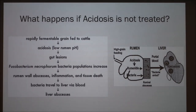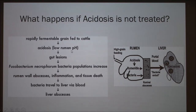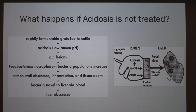If acidosis isn't treated, many serious consequences can occur. Going through the cycle: the animal eats grain, which is rapidly fermentable, and they develop acidosis due to low rumen pH. Gut lesions begin to occur, and the populations of Fusobacterium necrophorum — the major acid-producing bacteria — increase. The rumen wall can abscess, leading to inflammation and potential tissue death. The bacteria then travel to the liver via the blood, causing the more serious condition of liver abscesses.